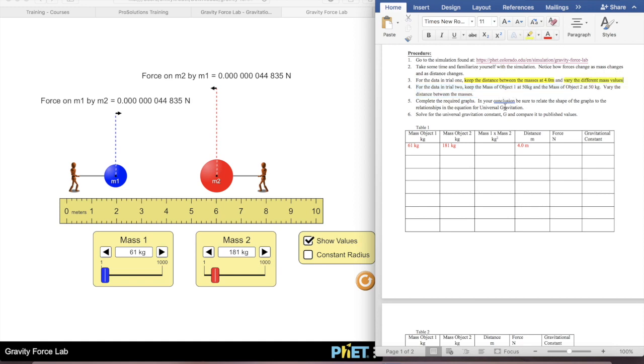It says vary the different mass values. And then I'm going to have a force. So I'm going to have 0.00000044835.